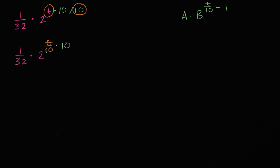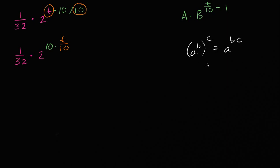We got a t over 10, but then we have this times 10. Let me write it the other way around as 10 times t over 10. What I just did isn't a huge stretch — I just multiplied and divided by 10. But when I write it this way, an exponent property might jump out at you. If I have a to the b and then raise that to the c, that's going to be a to the bc. Or going the other way, a to the bc is a to the b raised to the c.